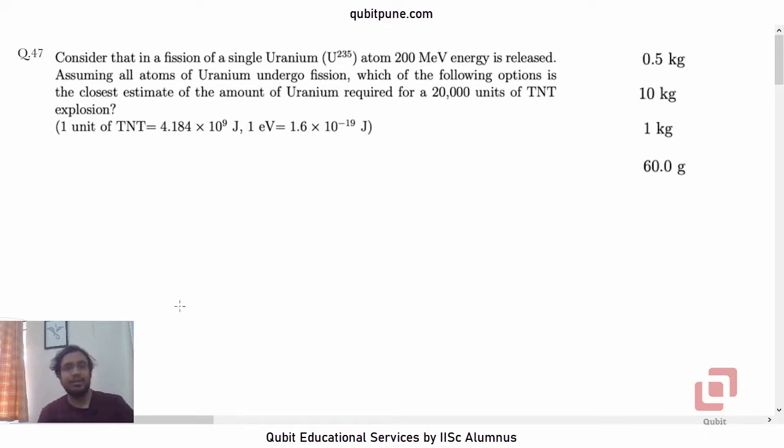Consider that in a fission of a single Uranium-235 atom, 200 MeV energy is released. Assuming all atoms of uranium undergo fission, which of the following options is the closest estimate of the amount of uranium required for a 20,000 units of TNT explosion? One unit of TNT corresponds to 4.184 × 10^9 joules, and one electron volt is 1.6 × 10^-19 joules. We are required to estimate the mass of uranium that will be equivalent in energy to 20,000 units of trinitrotoluene or TNT. We have options: 0.5 kg, 10 kg, 1 kg, and 60 grams.